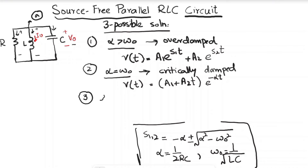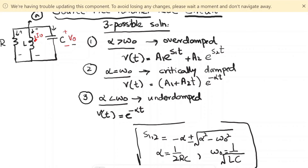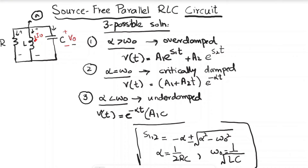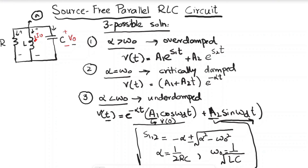Third, when α < ω₀ the response is underdamped: v(t) = e^(−αt)[A₁cos(ω_d t) + A₂sin(ω_d t)]. To find A₁, set t = 0 in v(t). To find A₂, take the derivative dv/dt and evaluate at t = 0. Remember α, ω₀, the roots s₁,₂, and these three responses to solve the circuit.